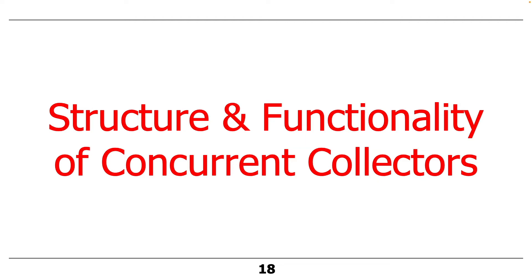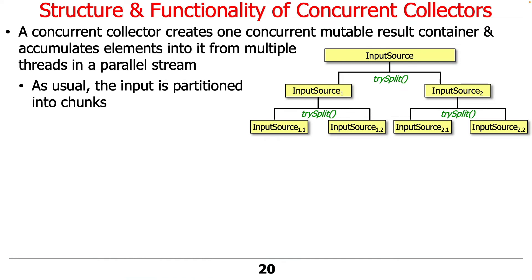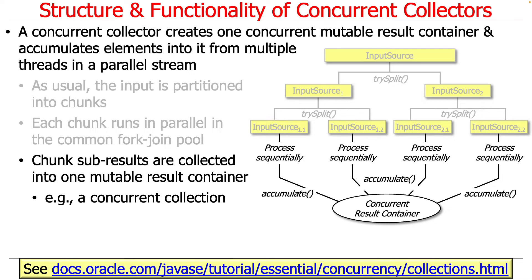Now let's talk about the structure and functionality of concurrent collectors. The difference is that a concurrent collector will collect into a single mutable result container. It accumulates elements from all the threads running in the common fork-join pool into one and only one mutable result container. The input is still partitioned into chunks by spliterators, and each chunk still runs in parallel in the common fork-join pool. The chunk subresults are collected together into one mutable result container, which needs to be concurrency-aware or thread-safe.